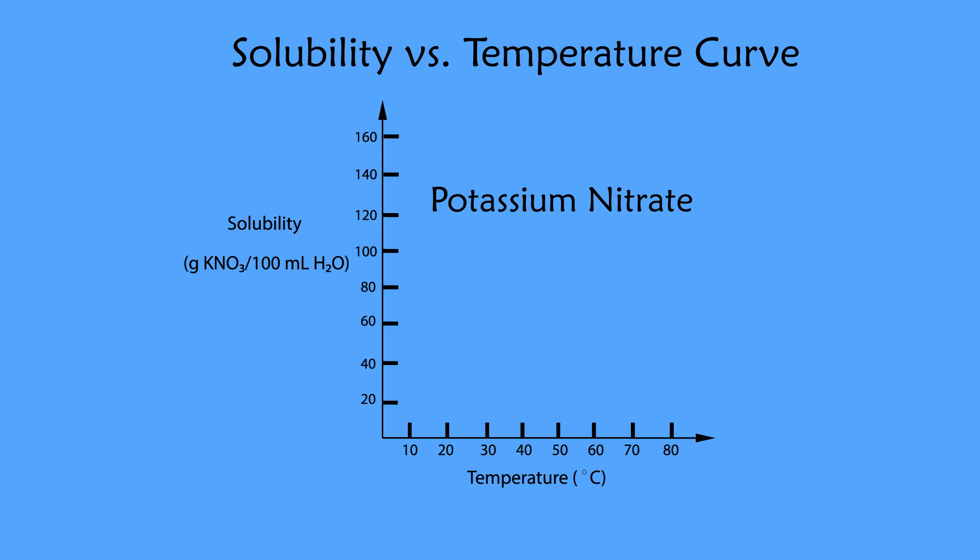Since there are 5 mL of water in each tube, you can multiply the grams of potassium nitrate by 20.